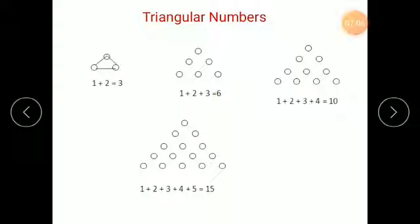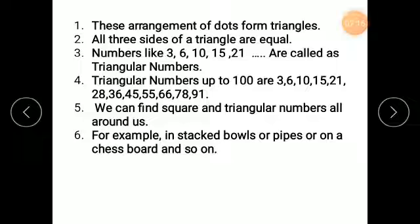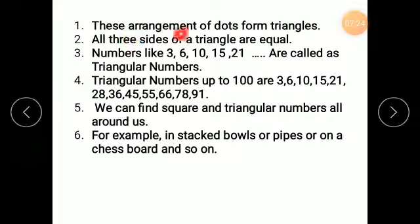The number of dots in each row will be one more than the previous row. The numbers in this arrangement are called triangular numbers. These arrangements of dots form triangles.